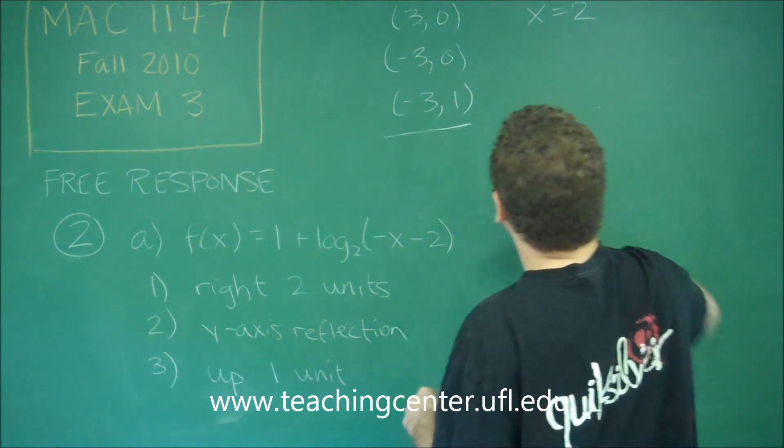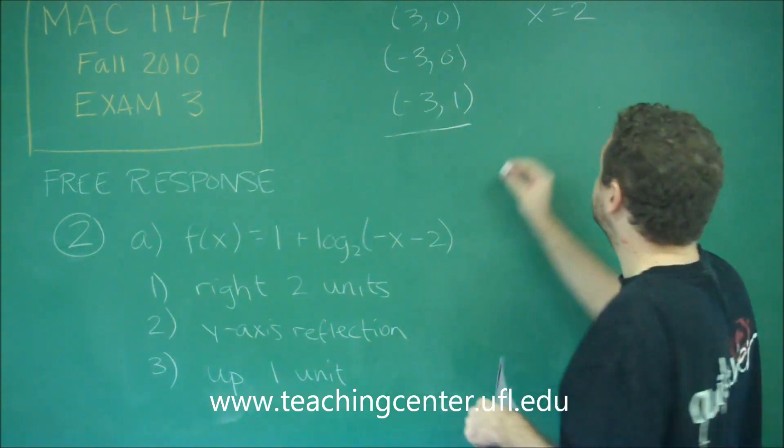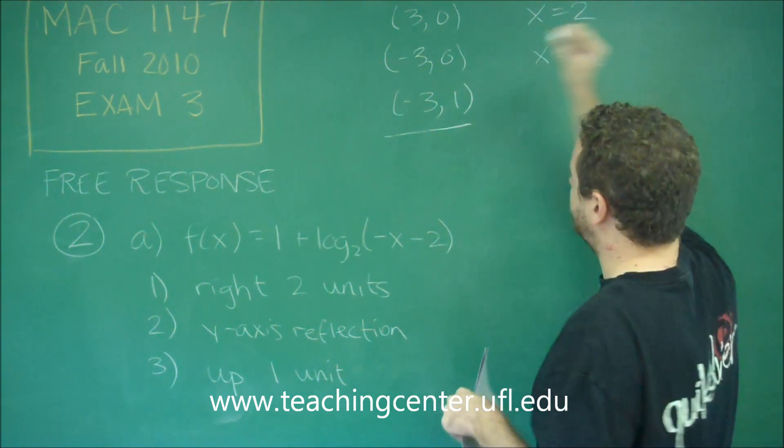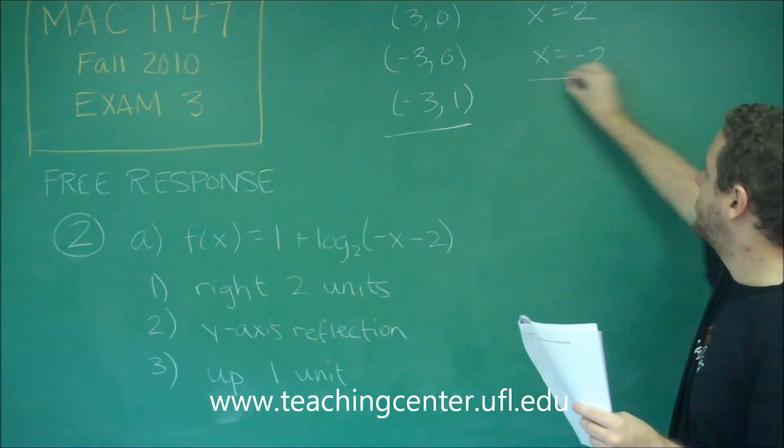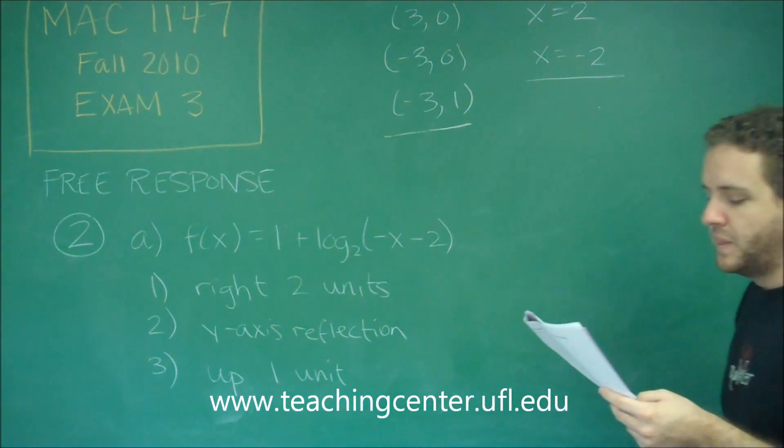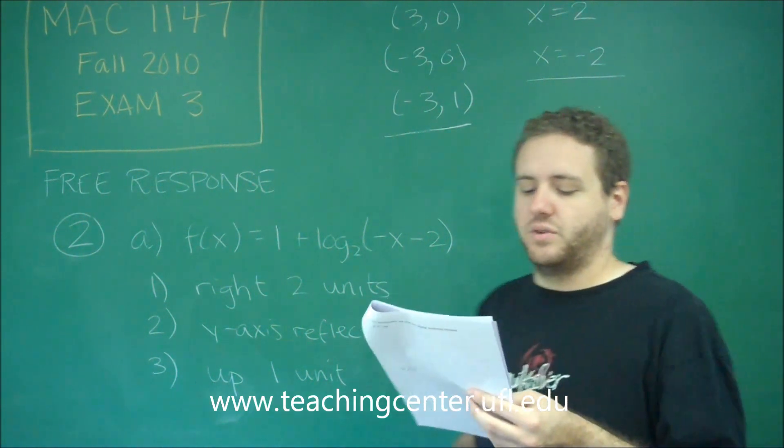Right 2 units would shift it to the right to be x equals 2. So this one was our point. Y axis reflection would now make it negative 2 because we flip it over to the other side. Shifting up or down doesn't change that so x equals negative 2 is our new equation of the vertical asymptote.